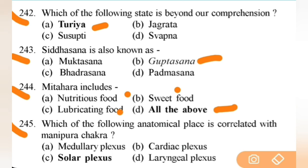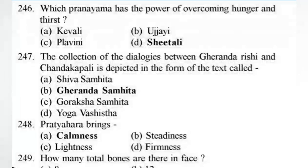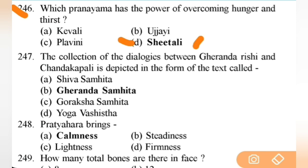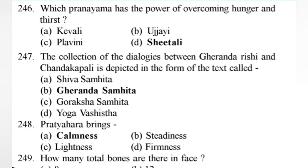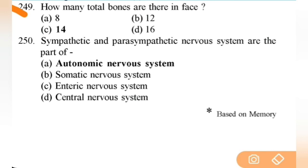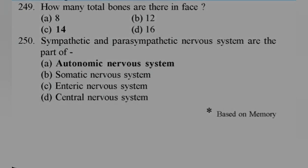Which pranayama has the power of overcoming hunger and thirst? Right answer is D — Sheetali. Next: the collection of dialogues between Rishi Gherand and Chanda Kapali depicted in text form is called Gherand Samhita. Next: Pratyahara brings — right answer is A — calmness — important. Next: how many total bones are in the face? Right answer is 14. Next: the sympathetic and parasympathetic nervous system are parts of — right answer is A — the autonomic nervous system.